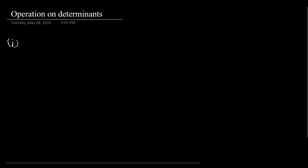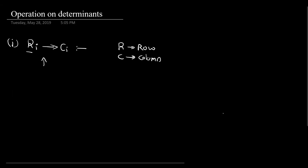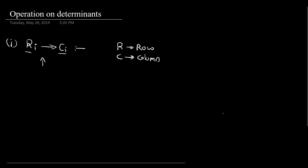The first symbol that we are going to study is denoted by ri to ci, where r is basically row and c is our column. We use this symbol if we want to convert every row into the corresponding column. So when we want to perform an operation where we want to convert every row of the determinant into the column of the determinant, then we use this kind of symbol.